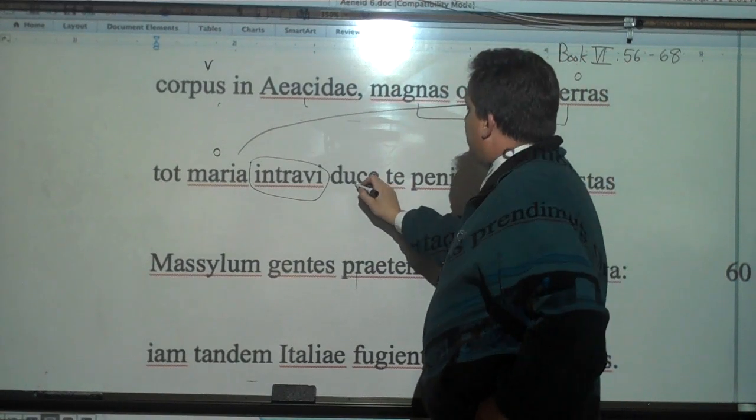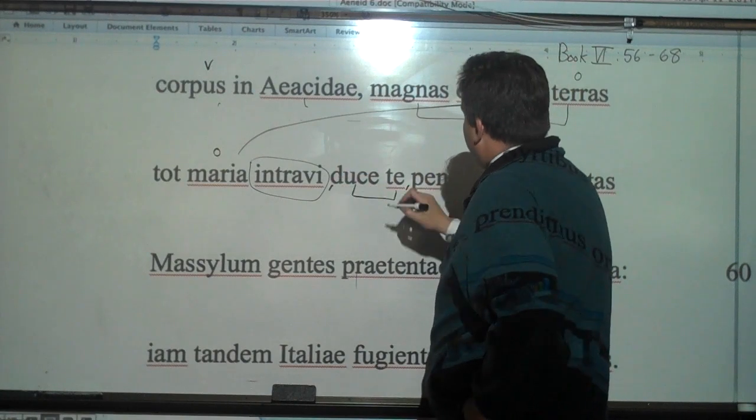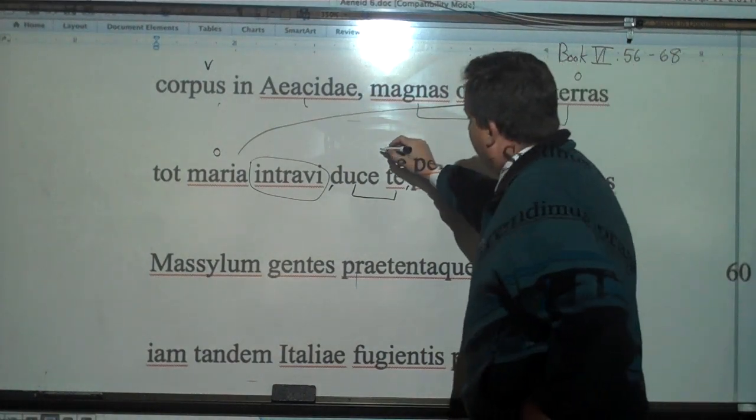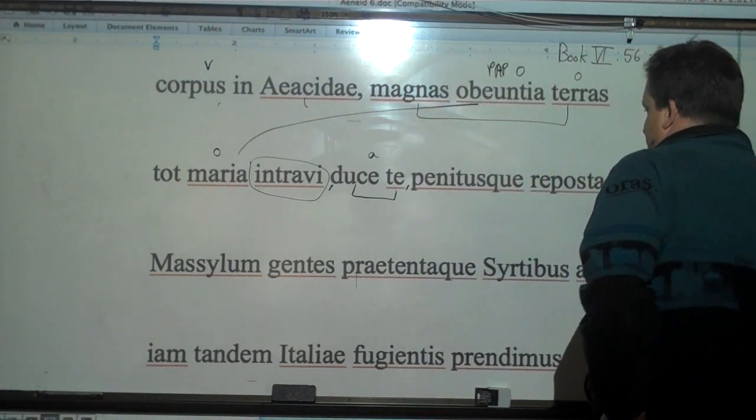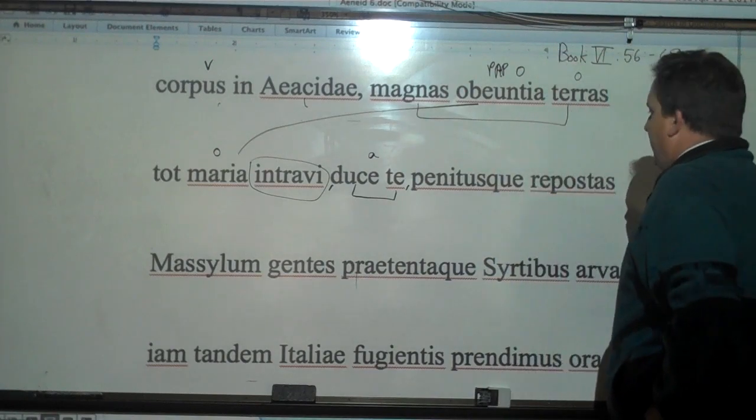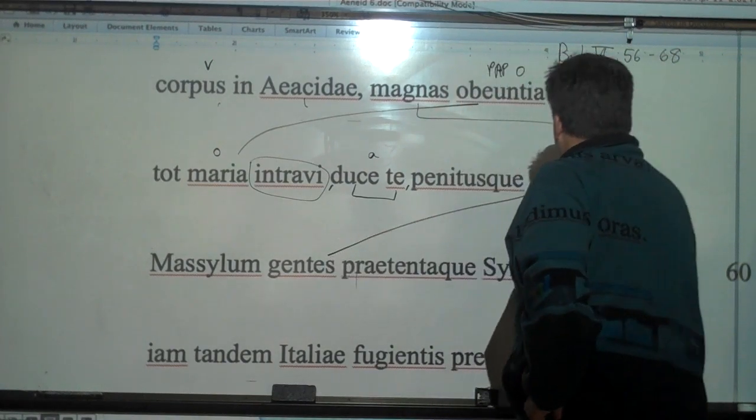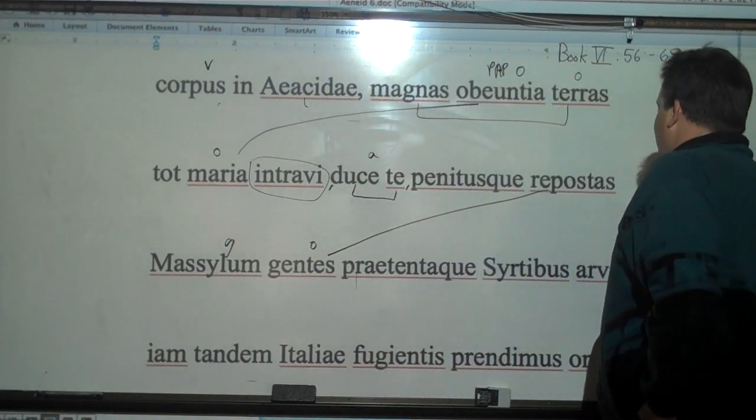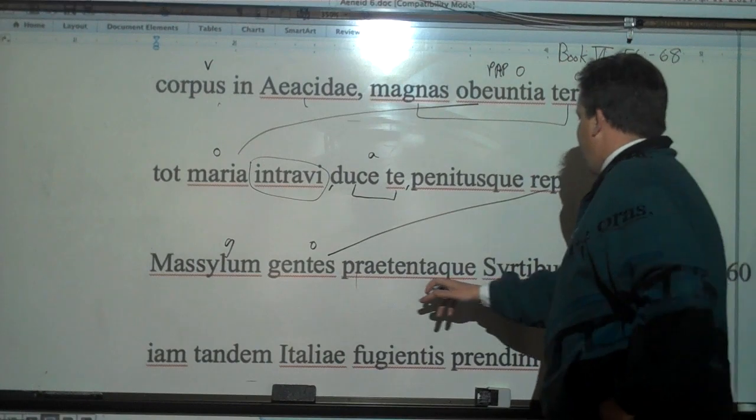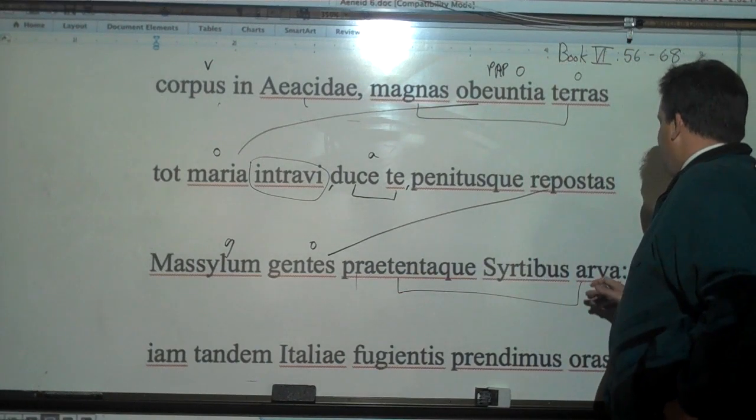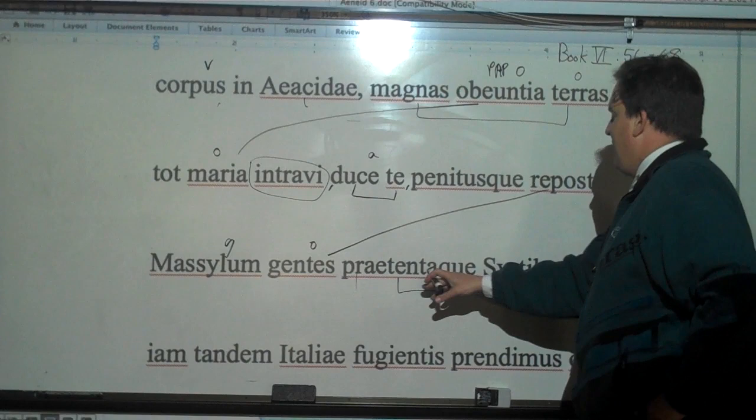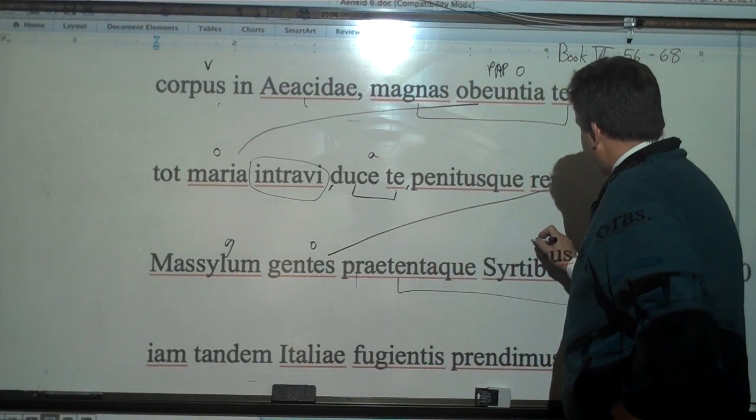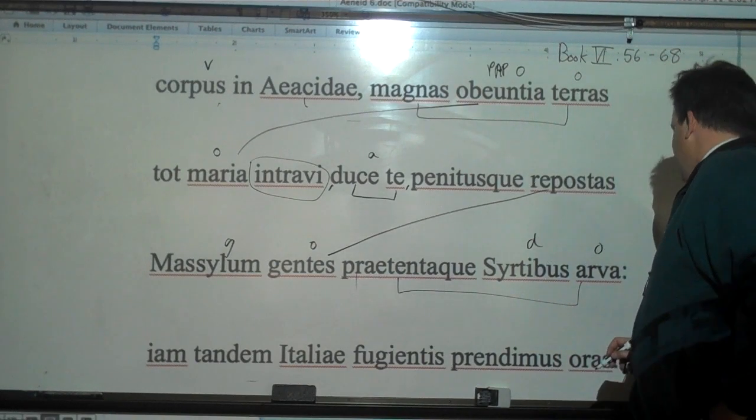And with te duce, nice little ablative absolute. I put a little commas there. Duce te, with you being leader. And I entered deeply, the deeply placed back peoples of the Massylians. And the arva, or the extending, or they say that the plowed lands extending, or having been extended to the Syrtes. Dative.